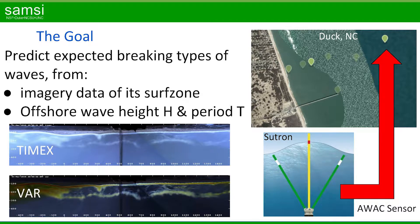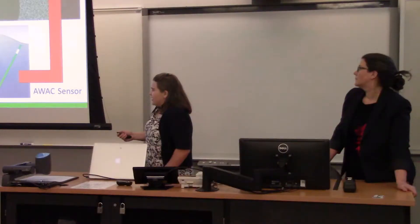We also have photos: a Timex image, where along the top is the beach line and it goes out to sea further down — this is the average of many samples taken over a 10-minute period put together. Below that, we have the variance — the statistical variance of that collection of data over the same 10-minute period.